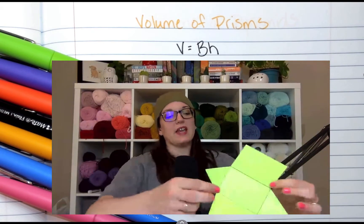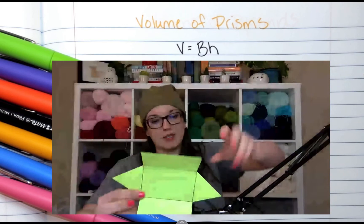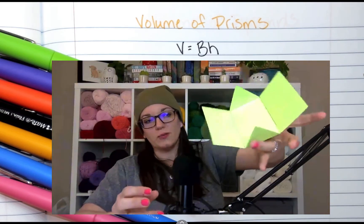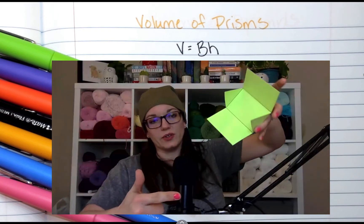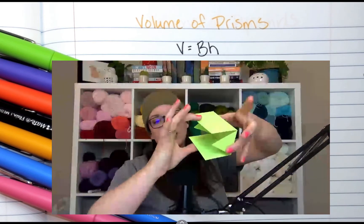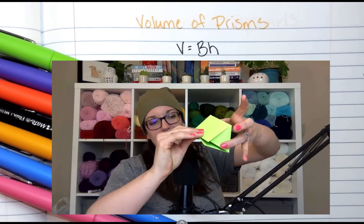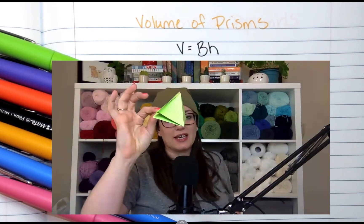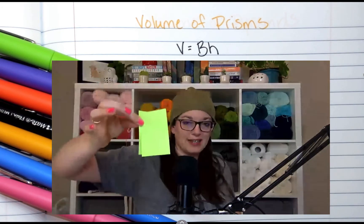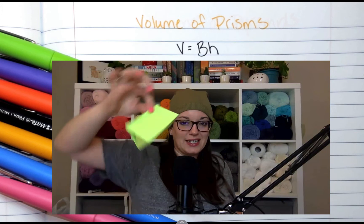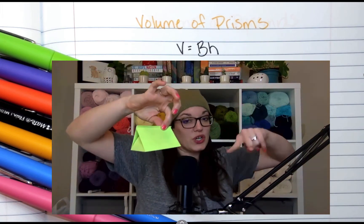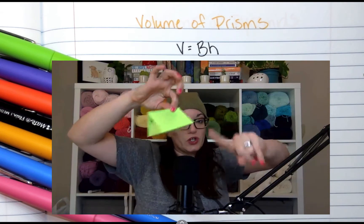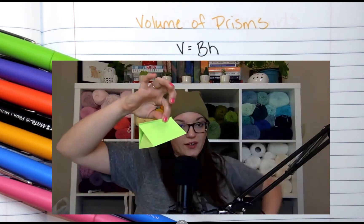Now this one is a triangular prism. It has two triangle bases and three rectangle lateral faces, and when you fold it up, it looks like this. Now what makes this one tricky is that a lot of times it's not going to sit on its base like this. It's going to sit like this, and you have to remember this is a triangular prism, so the triangles are the bases.